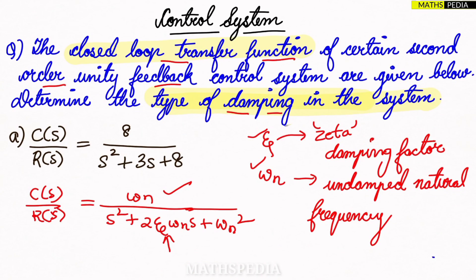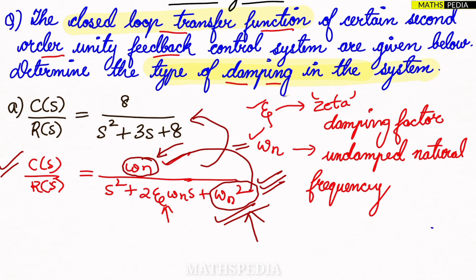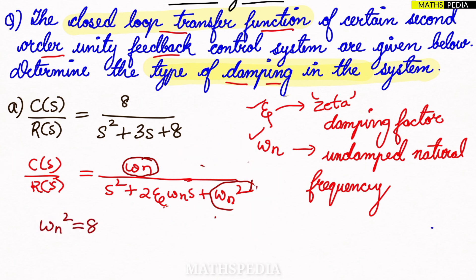Now let's solve the first problem. We compare the given transfer function with the standard second-order closed-loop transfer function. The first step is to identify the omega_n value. By comparing, you can observe that omega_n² is in the denominator. Always take the omega_n value from the denominator, because in some questions the numerator value may differ.